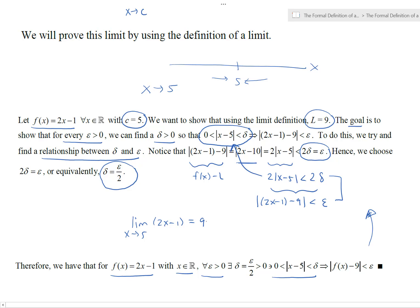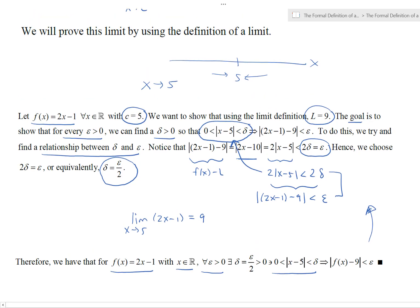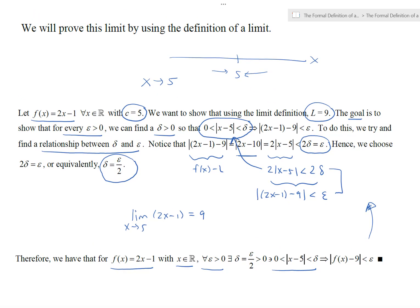That's the proof. We had to come up with the relationship between epsilon and delta in order to show the limit definition holds, and once we do that we've proven that a limit exists in that particular situation. That's a little intro video on it. Next video we're going to start talking about some properties of limits.